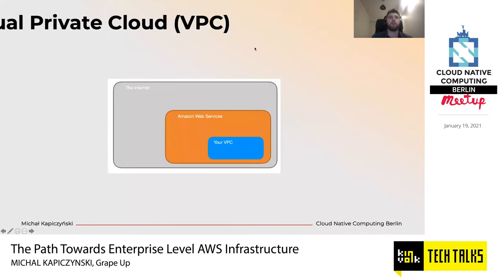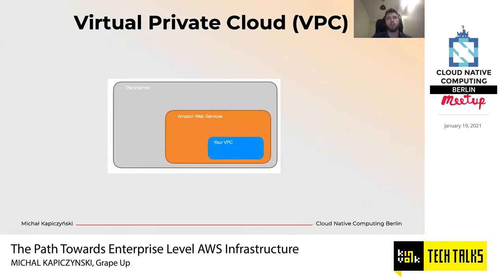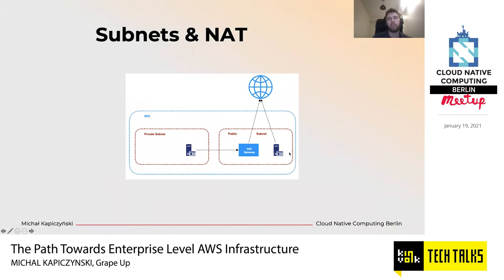A Virtual Private Cloud, or VPC, is an isolated virtual network which is part of the AWS network in which we can launch our AWS resources. Within the VPC, our resources have private IP addresses through which they can communicate. We can control access to all those resources and route outgoing traffic however we like. However, we cannot launch EC2 instances directly into the VPC — we need subnets for that. Subnets are additional isolated areas with their own CIDR block and routing policies where we can launch instances.